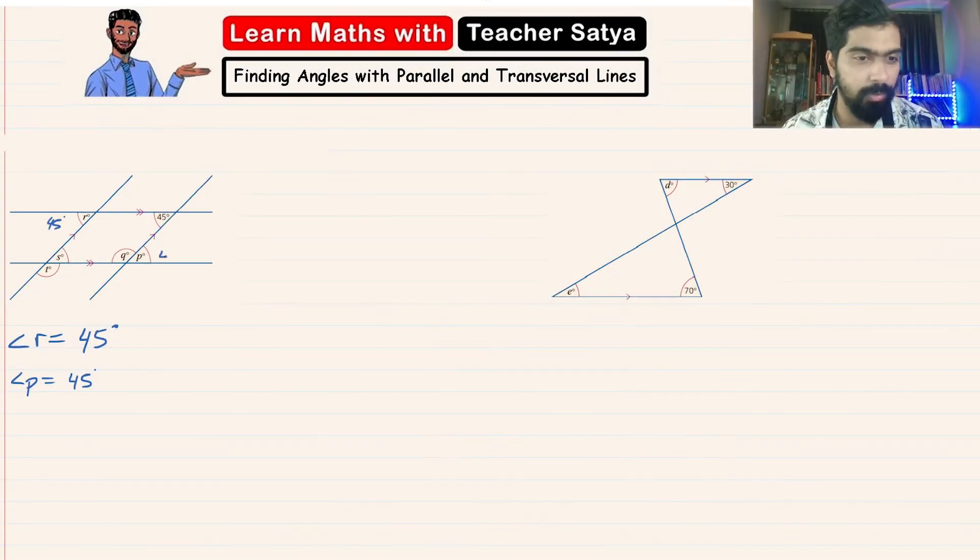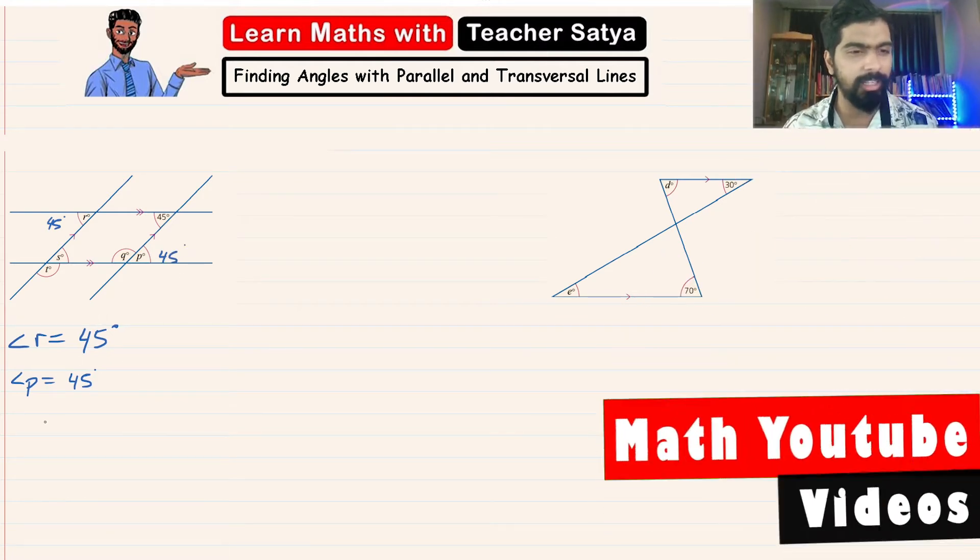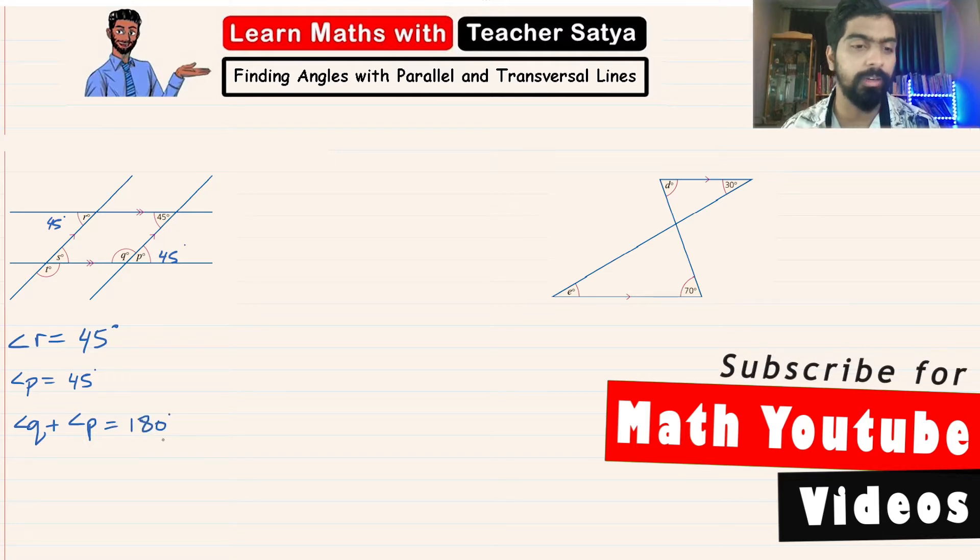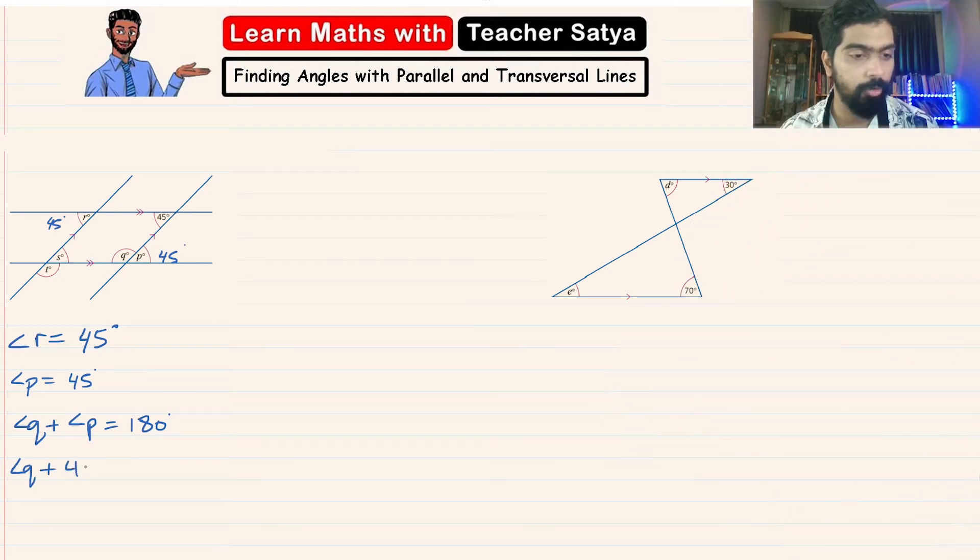Now since we have found angle P which is also 45 degrees, we can easily find angle Q. Angle Q and angle P form a straight line. So angle Q plus angle P is equal to 180 degrees. We know angle P is 45 degrees, so angle Q plus 45 equals 180. If we subtract both sides by 45, we have angle Q equals 180 minus 45 which equals 135 degrees.